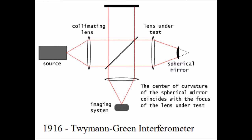In 1916, the Twyman-Green interferometer, essentially a modified Michelson interferometer, was used as the trailblazer for modern optical component testing.